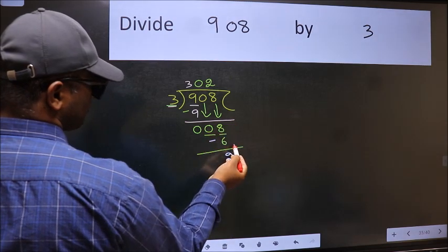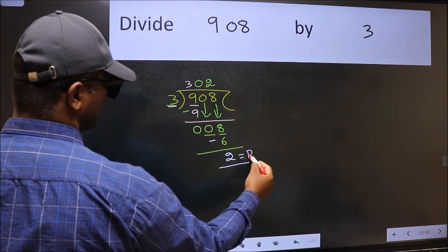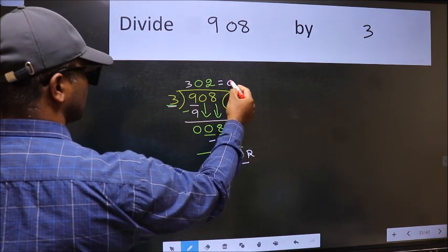No more numbers to bring down. So we stop here. This is our remainder and this is our quotient.